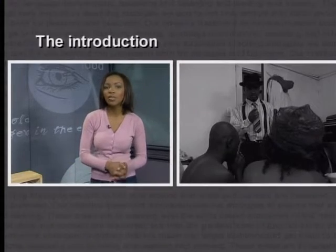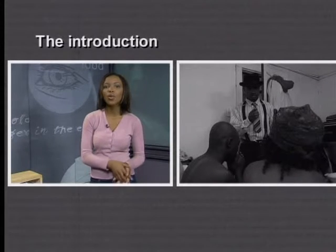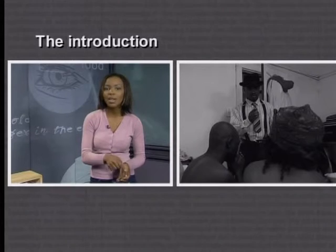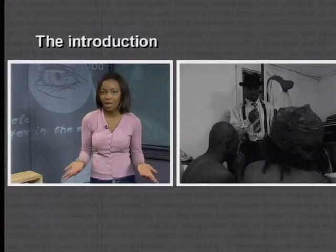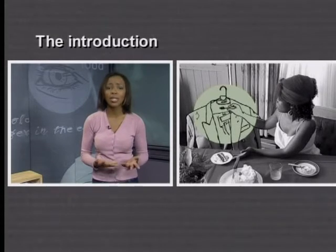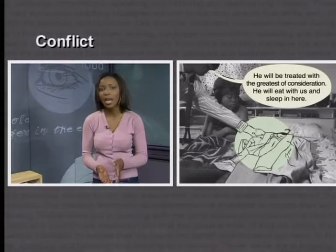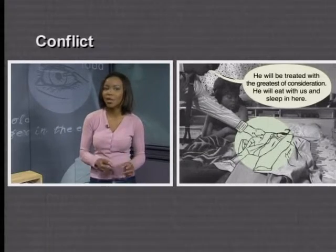The first type of conflict — conflict between characters — definitely happens in The Suit, as there is plenty of conflict between Philemon and Matilda. Usually, the introduction of the story lets the reader know what the conflict is. In this case, the conflict is that Philemon loves his wife, but she's having an affair. The rise in action of the plot shows the struggle between these characters becoming more and more intense, and the conflict develops further when Philemon punishes Matilda by making her lover's suit the center of their lives.